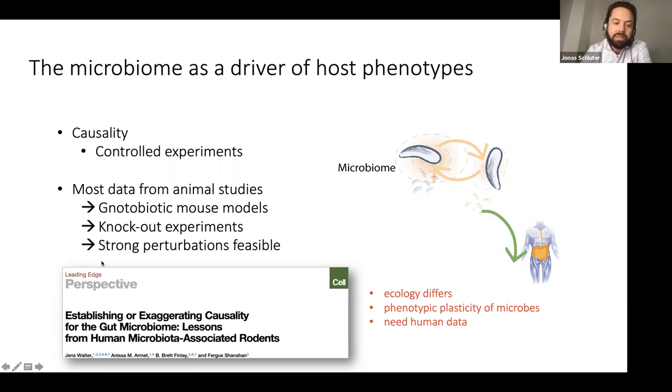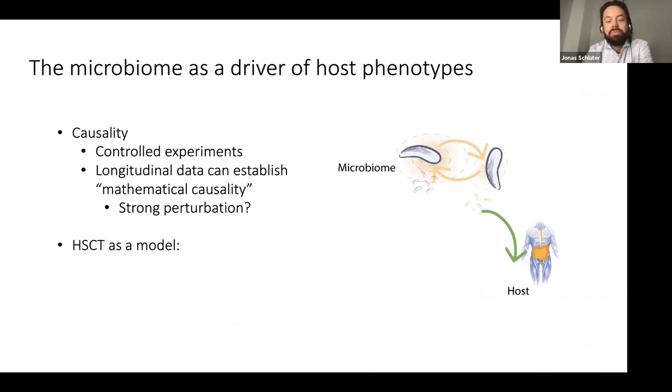In either way, a strong perturbation on the host or the microbiome side is feasible using mouse models. However, there has been a paper out last year criticizing the utility of mouse models for microbiome studies because of the strong differences in ecology that exist between a mouse and a human host, and there's a strong need for more human data and validation in humans for the relationships identified in highly artificial mouse studies. Because it is very difficult to do experiments in humans, I want to introduce hematopoietic stem cell therapy and patients undergoing this therapy as a model to study causal relationships between the microbiome and the host.